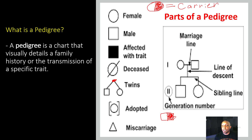Now let's go ahead and take a look at these other parts. Let's look at our marriage line. If you notice, here's this line right here, and this represents a mother and a father who are married — or more importantly, a mother and father who have children. And here's the line of descent that goes down to the children. If you notice, this mother and father had a son and they had a daughter. And here's our sibling line right here, which shows that they're connected as siblings or brother and sister.